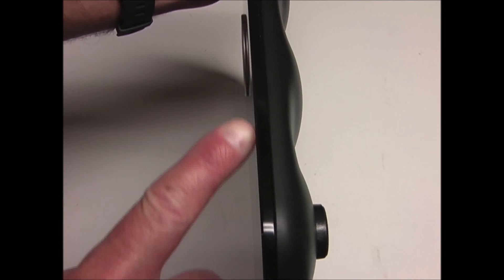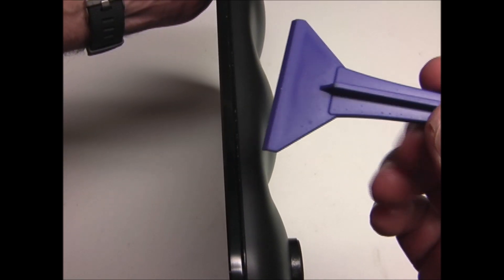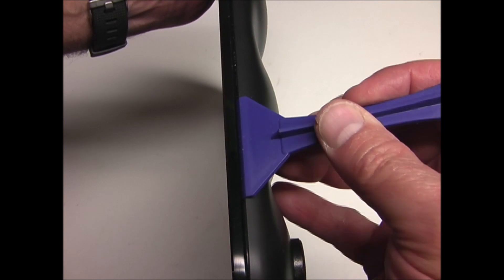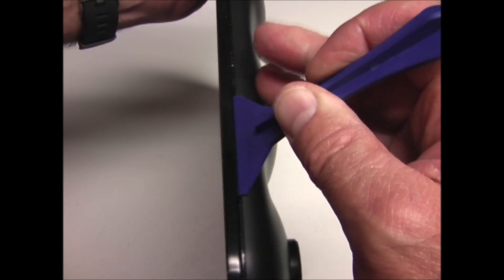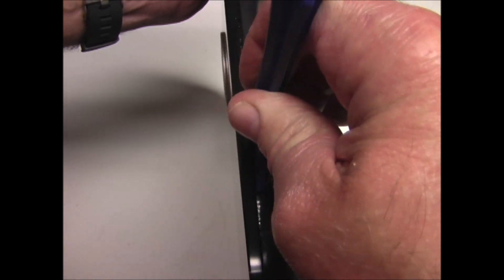So the next thing I'm going to do is pry the back off and you want to be very careful not to break this glass top. So you want to use a tool such as this and get in between the back plastic and the top and just pry that open.